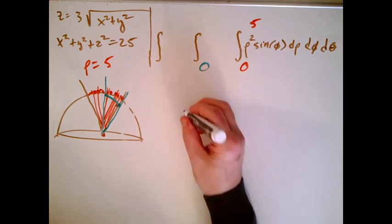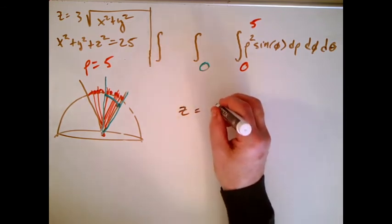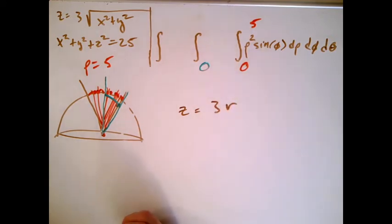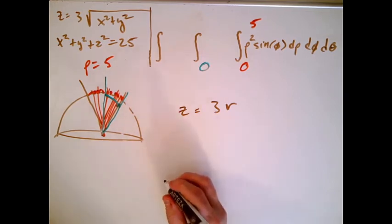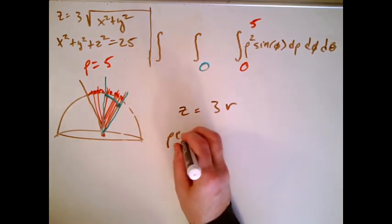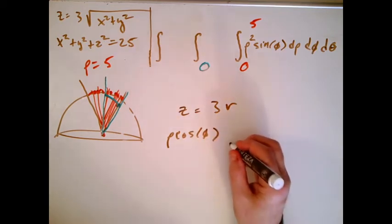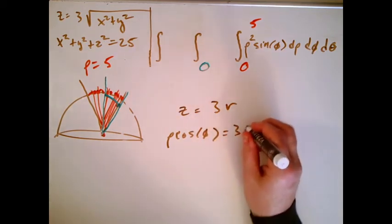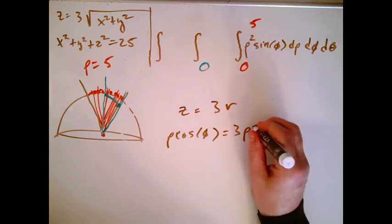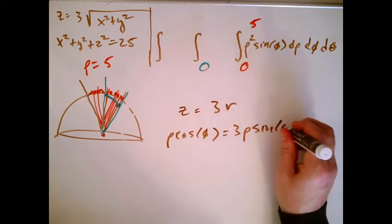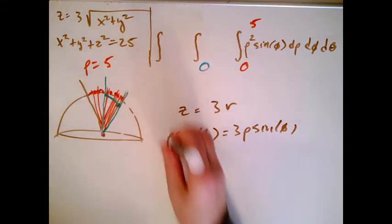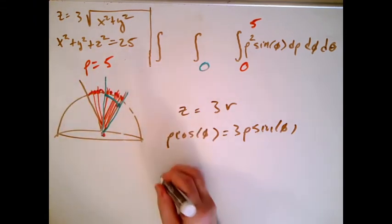I see z equals 3r. Well, let's change it to this first. I'm going to change it to z equals 3r. I mentioned that r is not in spherical coordinates, but it shows up in a lot of the calculations. We know that z is rho cosine phi, we know that r is rho sine phi, so I get rho cosine phi equals 3 rho sine phi.